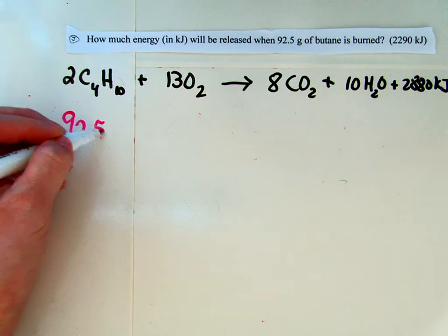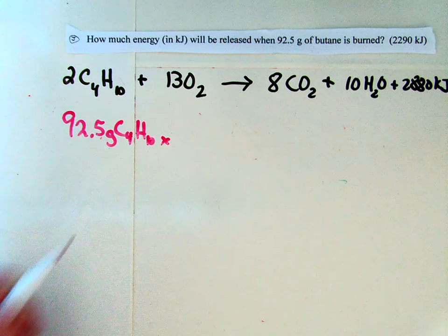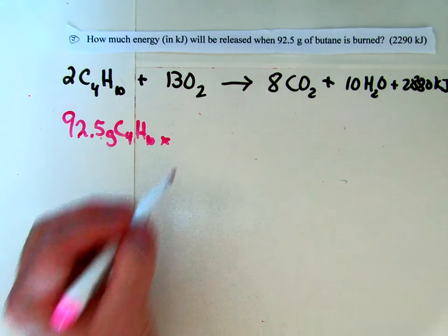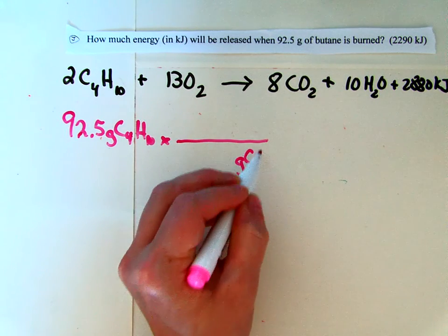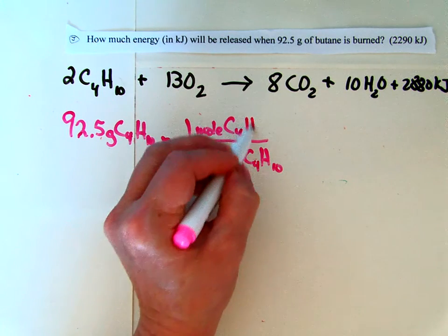So let's start with our 92.5 grams of butane. And whenever I give you grams at the beginning of the problem, you immediately need to change it to moles. So we're going to put grams of butane on the bottom, and we're going to put moles of butane on the top.